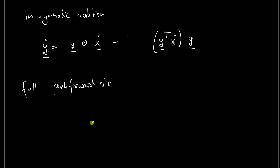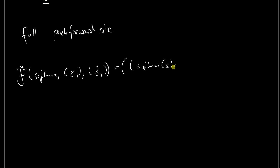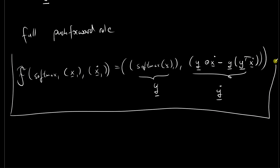The full push forward rule to be implemented in an automatic differentiation engine is as follows: given primal input x and tangent input x_dot, first compute the primal output y equals softmax(x). Then push forward the tangent information as y_dot equals y element-wise multiplied with x_dot, minus y multiplied with the scalar y^T x_dot. This reuses the primal computation twice and is the complete push forward rule for the softmax operation.